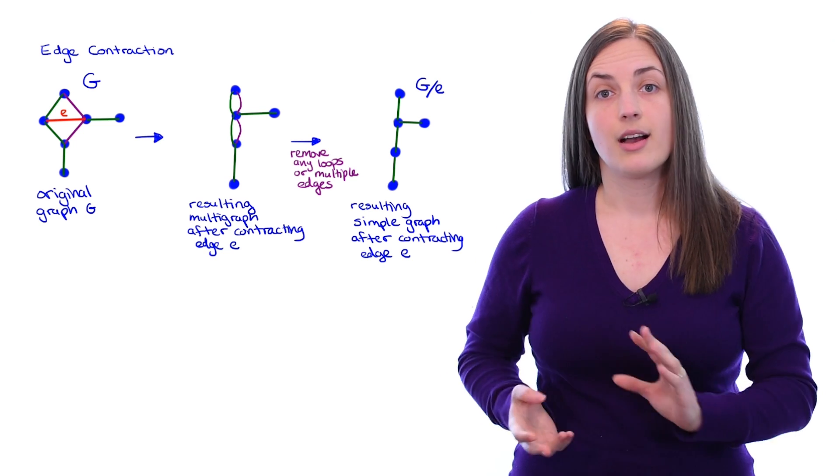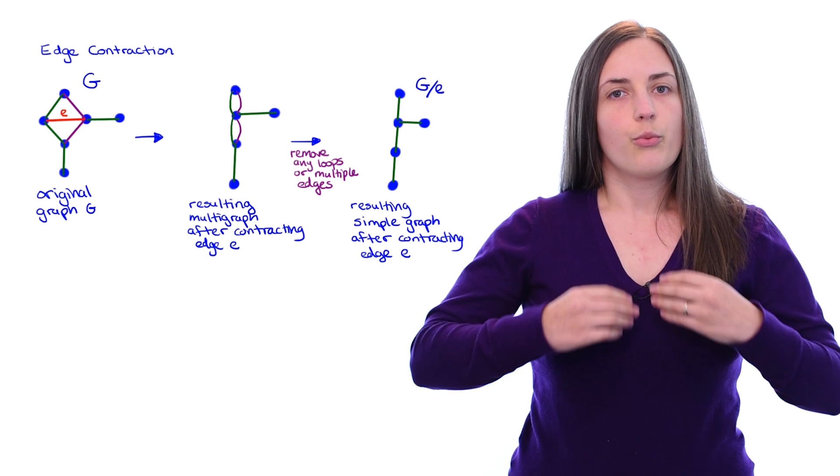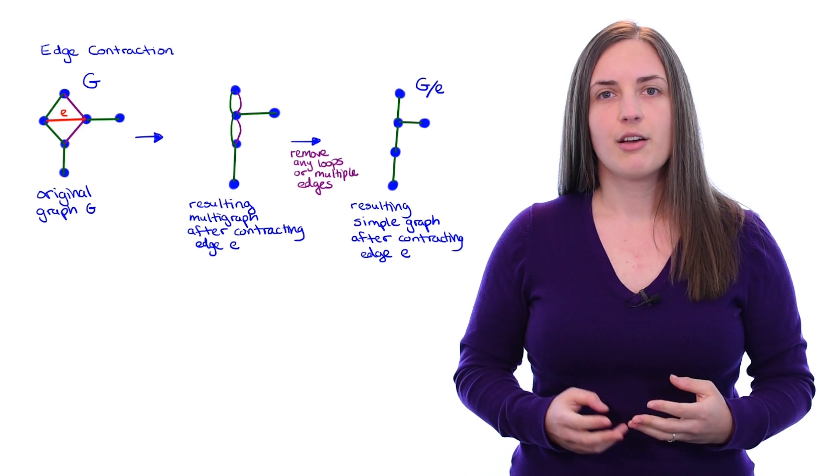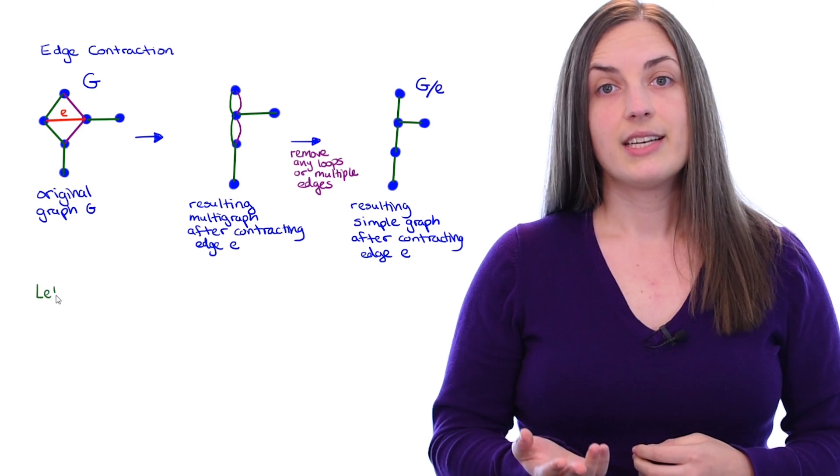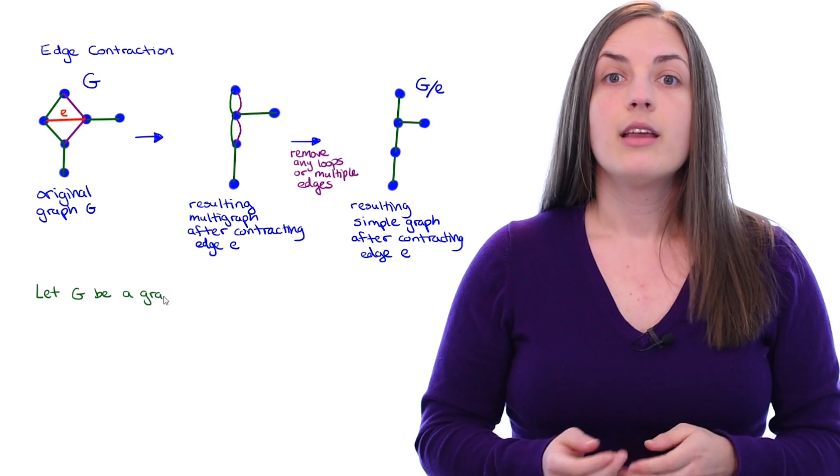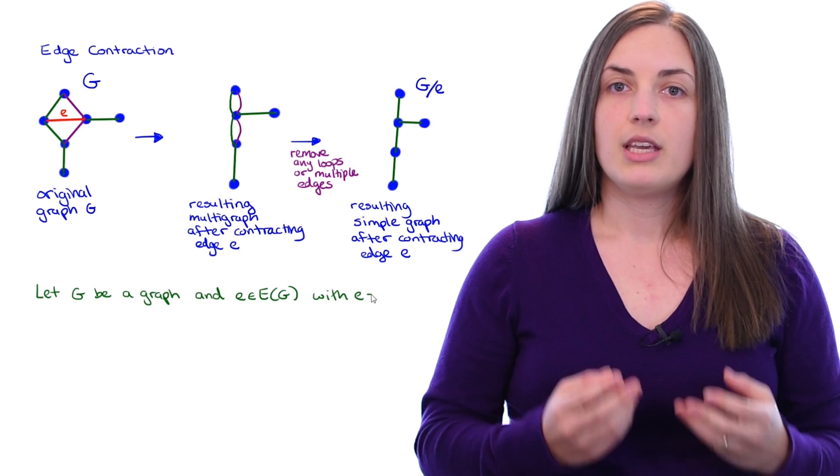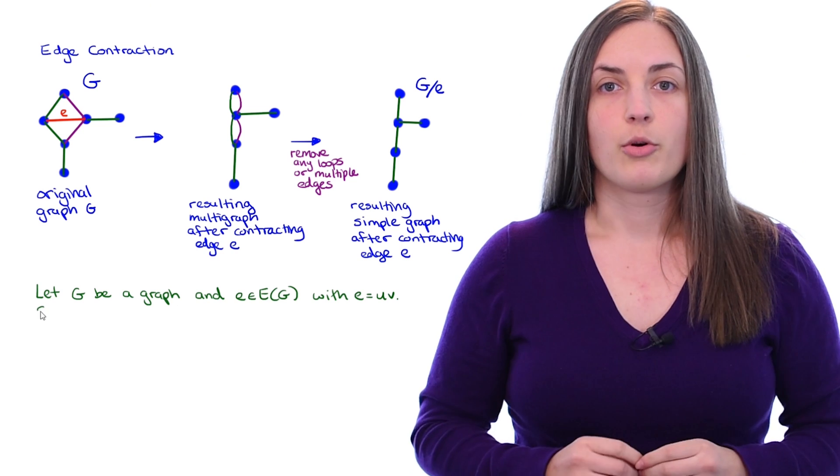Now I'd like to write down what we did in general for a graph. You can define an edge contraction much more formally than this, but this is enough to give you the intuition. Let G be a graph, and E belong to the edge set of the graph. Let E equal uv, so the end vertices of E are u and v.